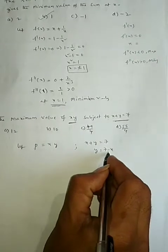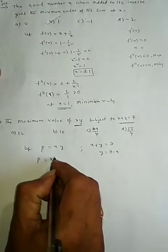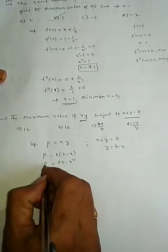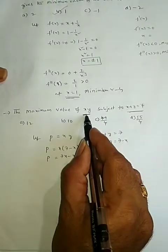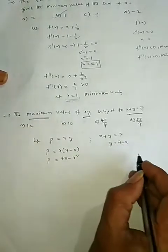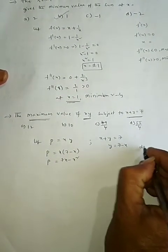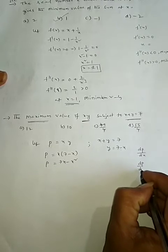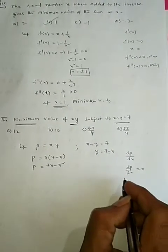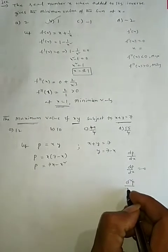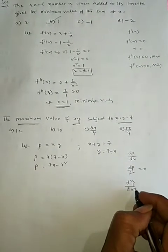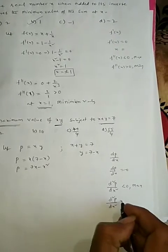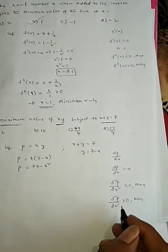Substituting this y value, we get p is equal to x into (7 minus x), which equals 7x minus x². This is the p value. Now, to find the maxima value of x·y, either maxima or minima — first find the derivative dp by dx. Then make dp by dx equal to 0. Either maxima or minima depends upon the double derivative d²p/dx². If d²p/dx² is less than 0, it is a maximum value; if greater than 0, it is a minimum value.